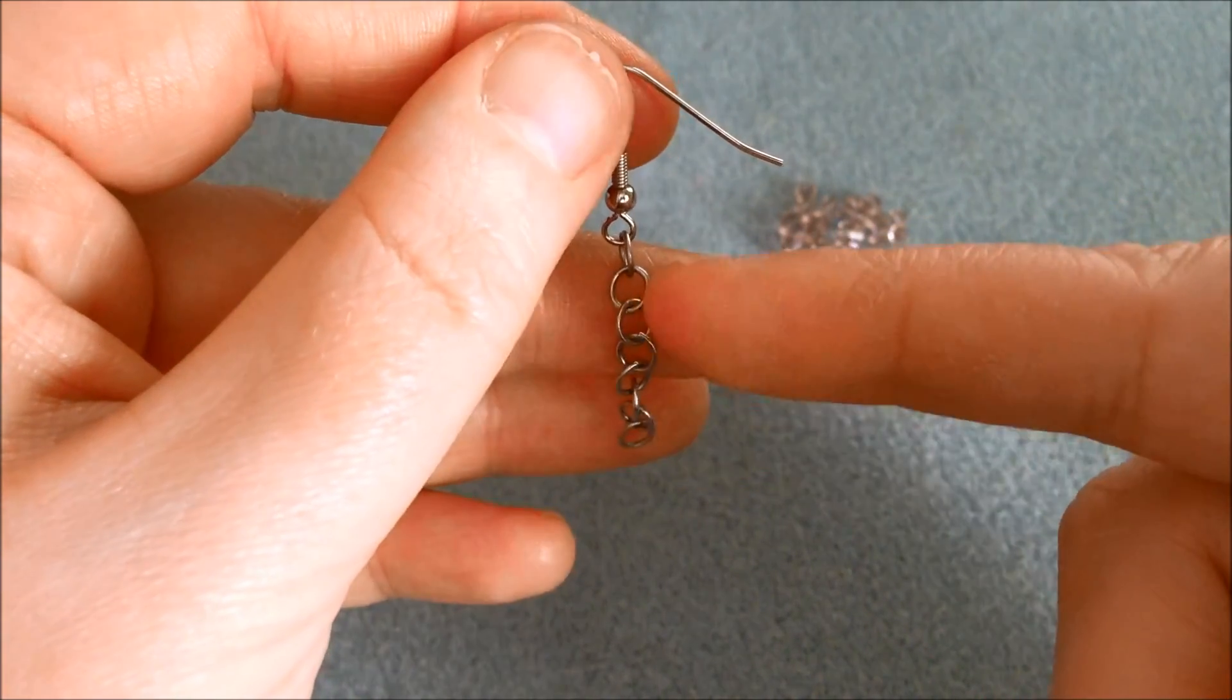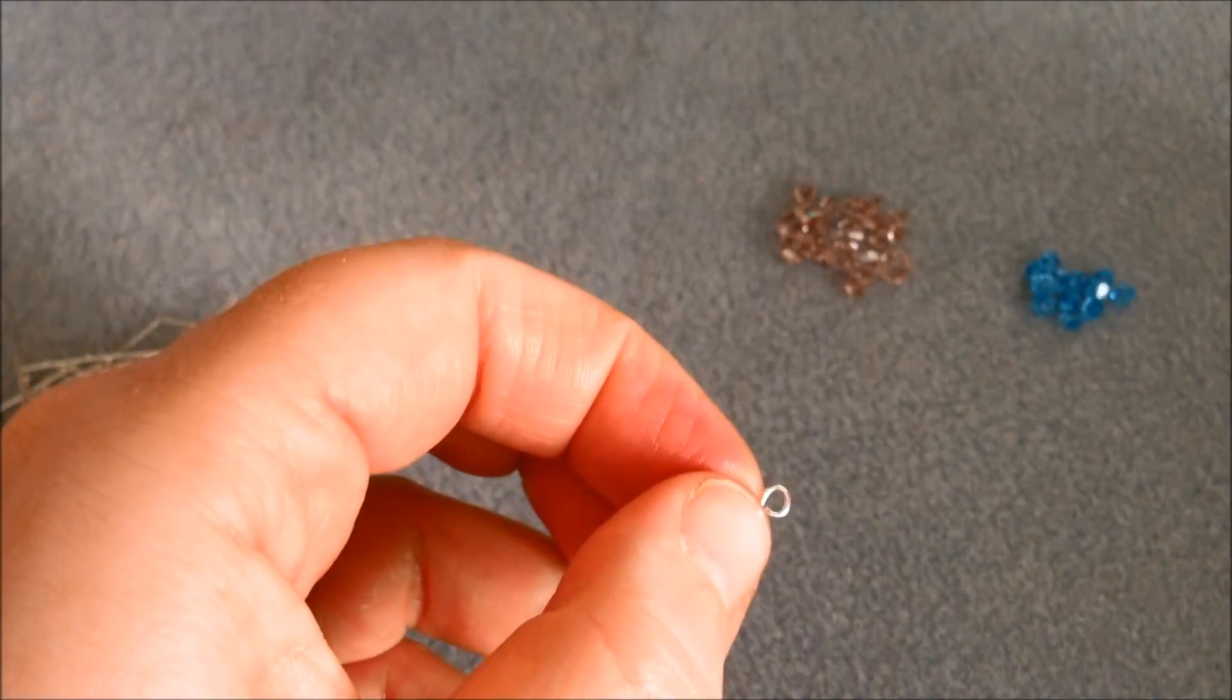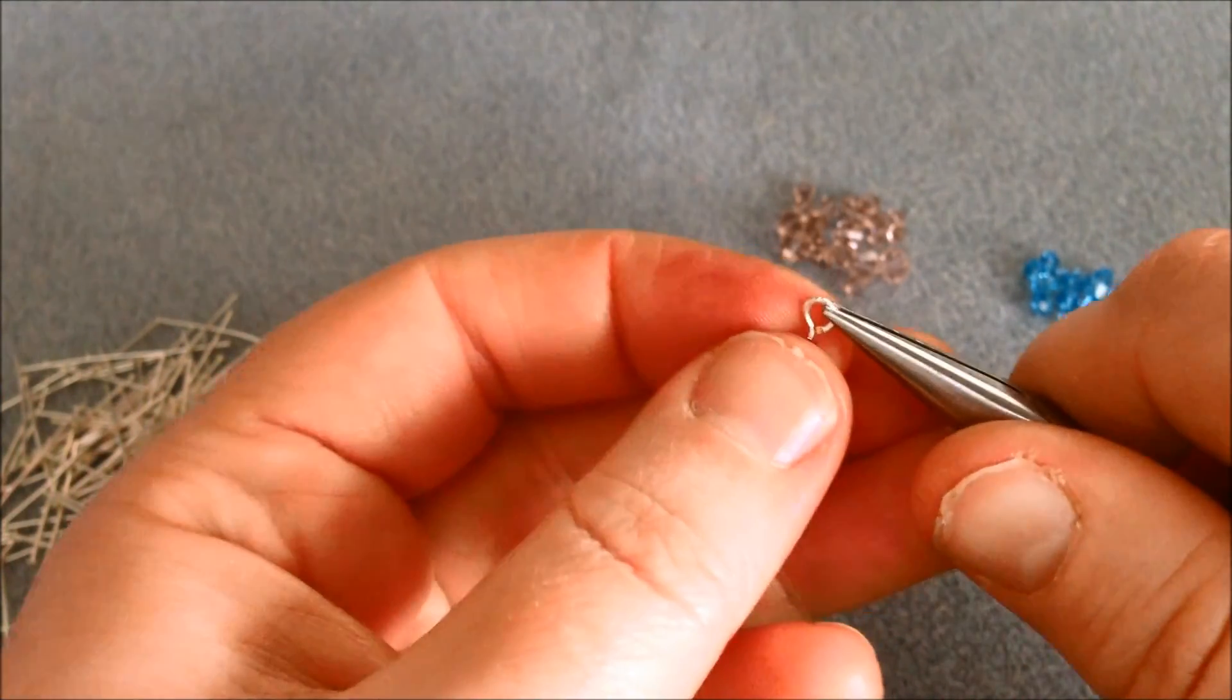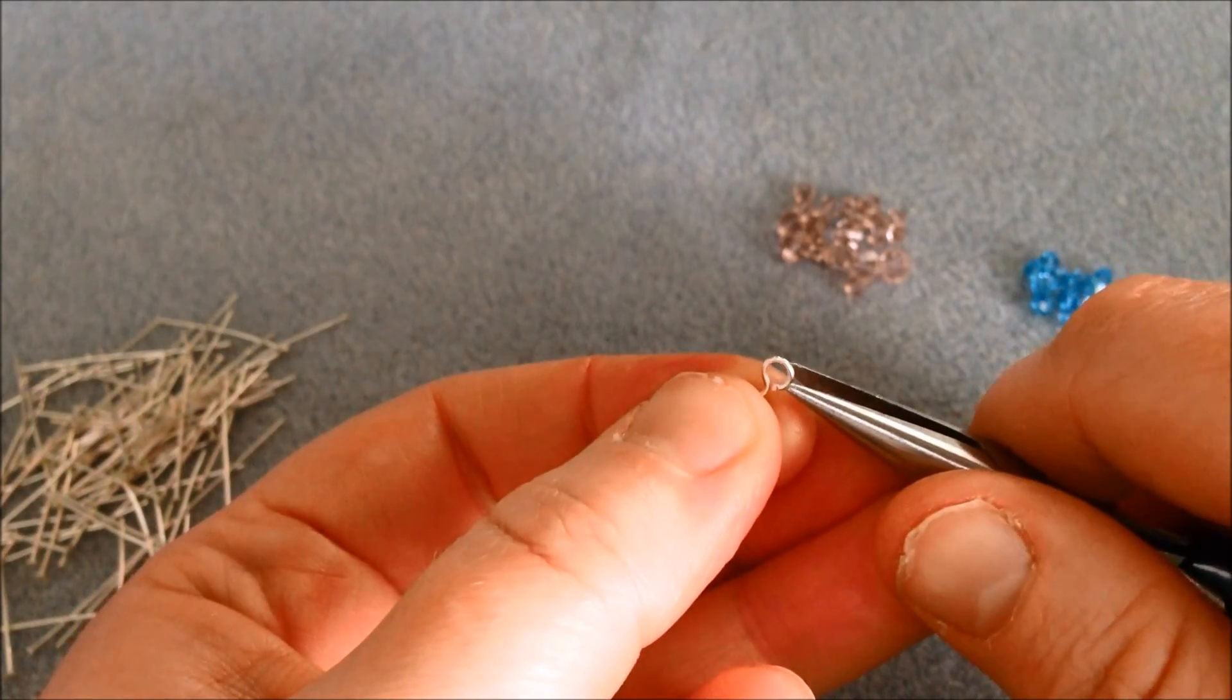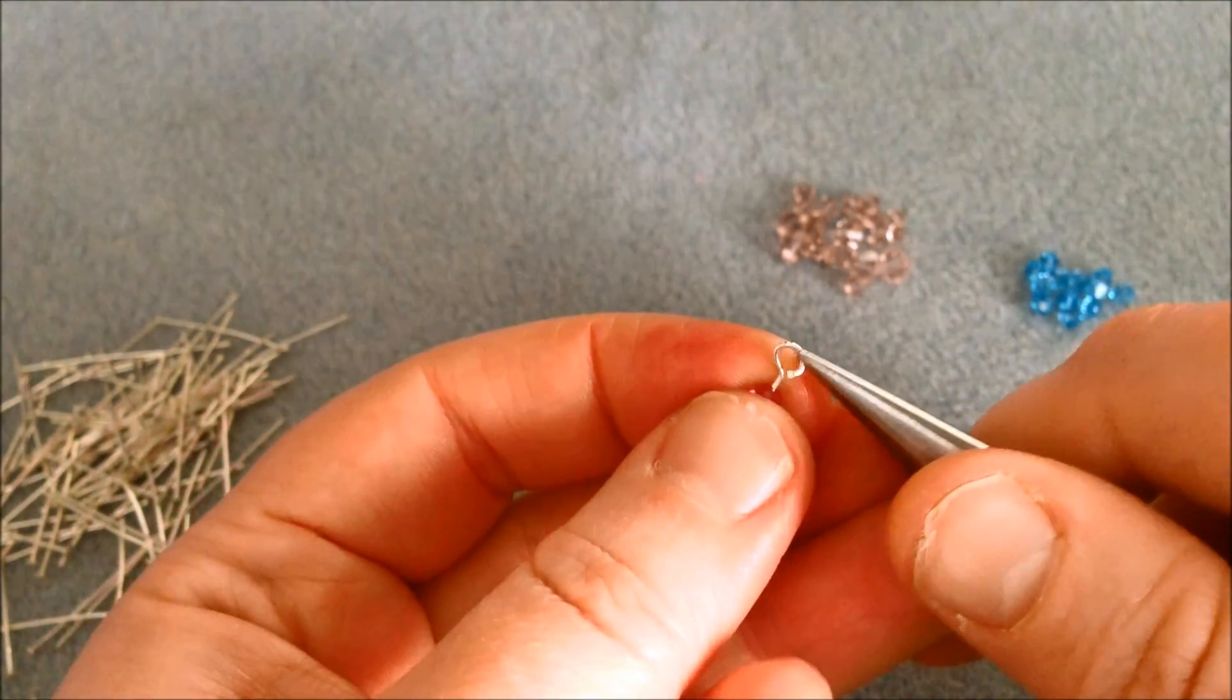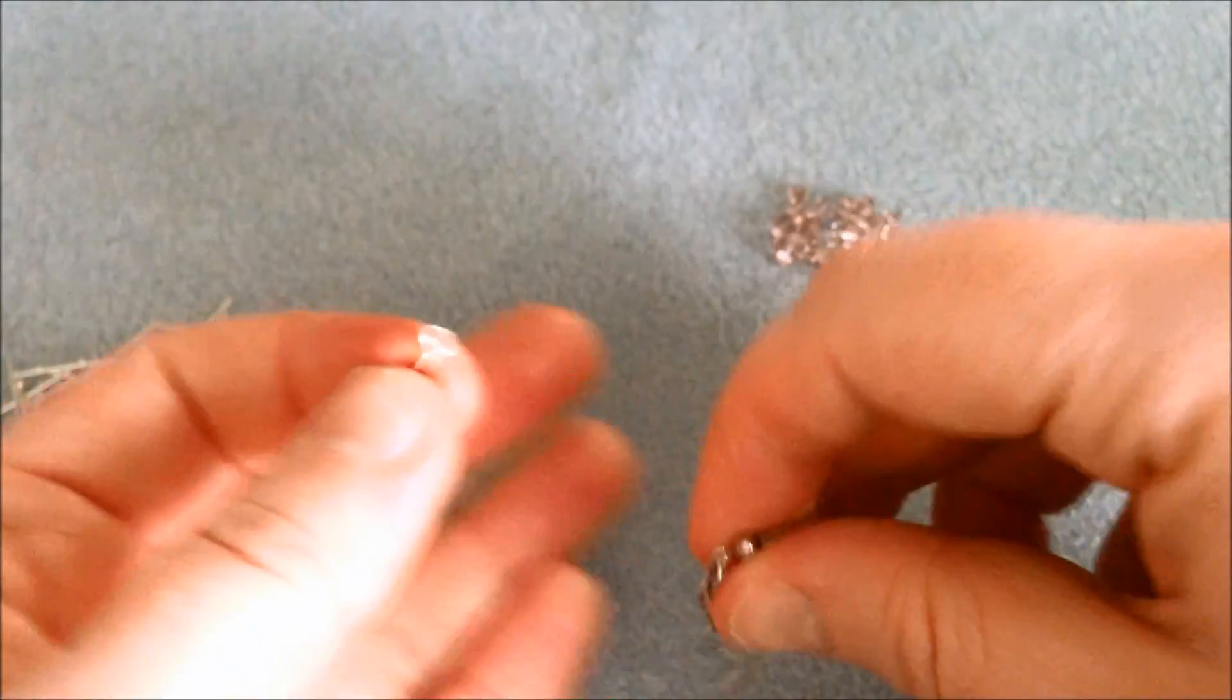And since you always usually attach on one side of them make sure that you attach on both sides and the way to attach this is very very simple. You just open the loop by pushing or pulling it towards yourself. Remember you never open loops by pulling apart like this because it will weaken the link and maybe break it.